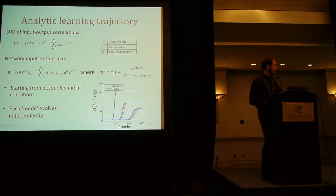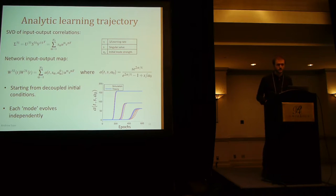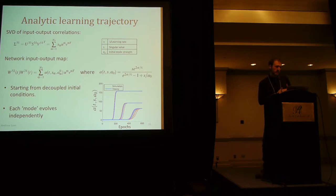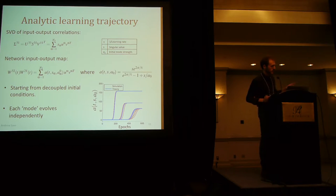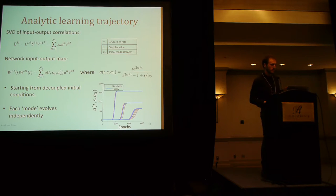We've been able to find a set of exact solutions for particular initial conditions that describe the entire trajectory. Eventually the network is going to come to represent the SVD of the input-output correlations — the top N components where N is the hidden layer size. The network's input-output map is learning those singular values, which increase over time according to a time-dependent singular value solution, shown as sigmoidal bumps rising from a low effective singular value strength to the correct singular value strength.